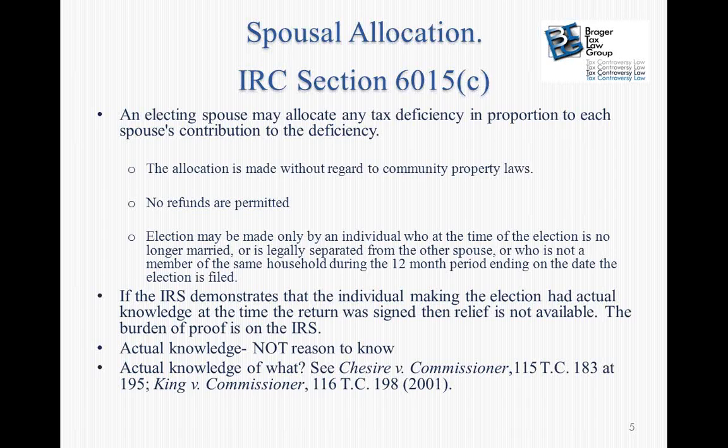In determining how you allocate between the spouses, you ignore community property laws. Even though the salary is community property — 50% husband, 50% wife — in this case it's allocated to the person who earned it. This election may only be made by someone who at the time of the election is not married, is legally separated from the other spouse, or is not a member of the same household for a 12-month period.